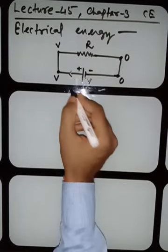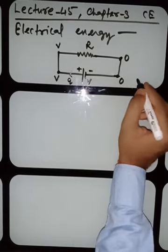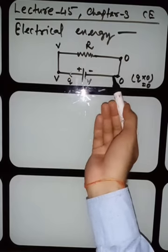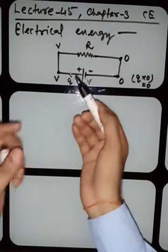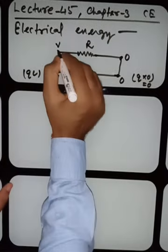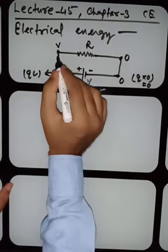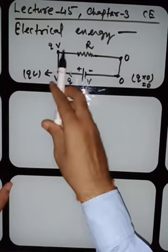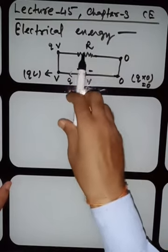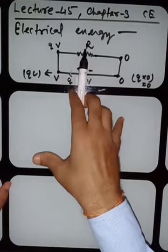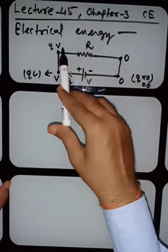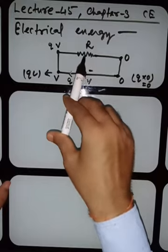Suppose a charge Q starts moving from the negative terminal. The energy of the charge there is Q times V, but the potential is 0 so the energy is 0. As we move from the negative to positive terminal, this charge is filled with energy Q times V. As it crosses the resistor, this energy is withdrawn by the resistor. That energy lost on the resistor is what we are going to study — that is electrical energy.